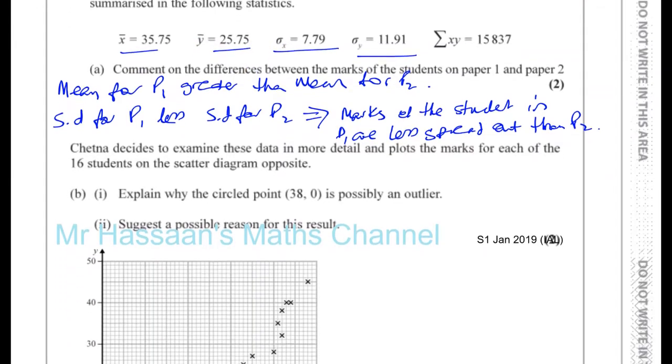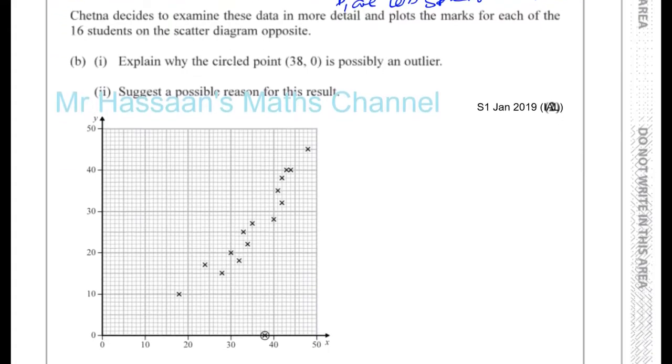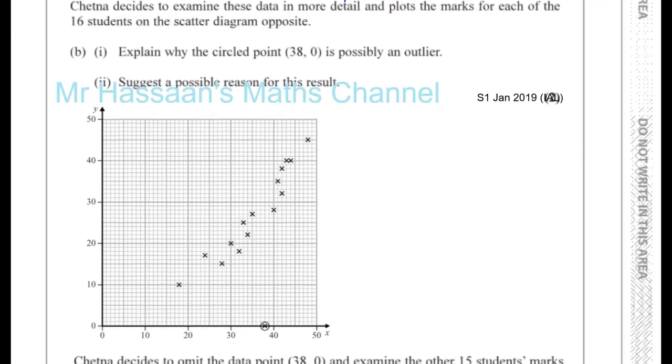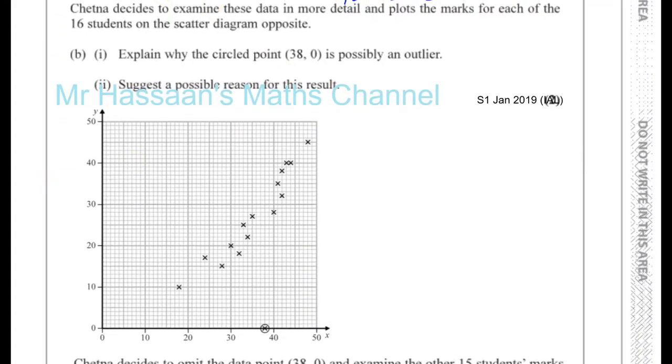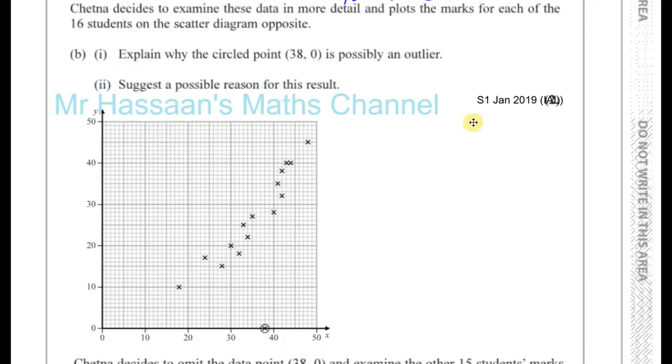Chetna decides to examine these data in more detail and plots the marks for each of the 16 students on a scatter diagram, which is shown opposite. Well, I've just copied it and put it below so we can see what's happening.